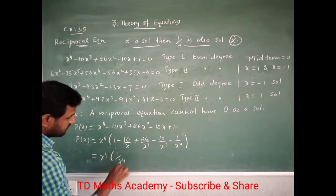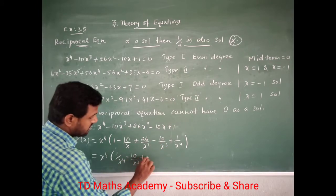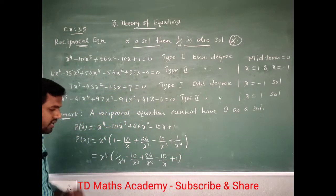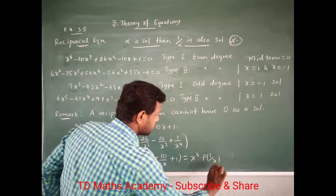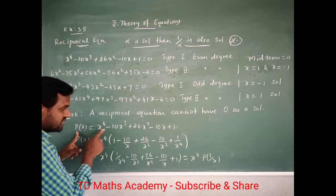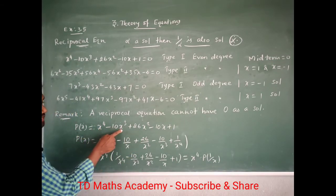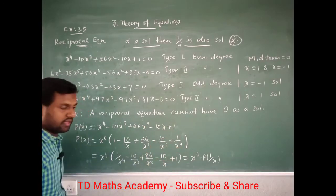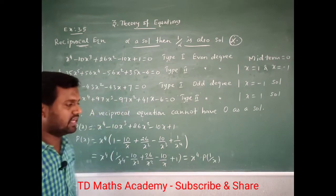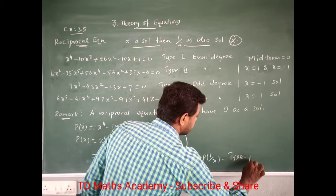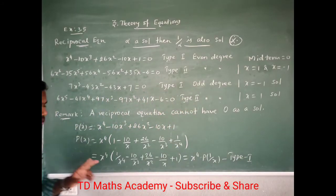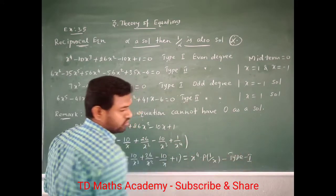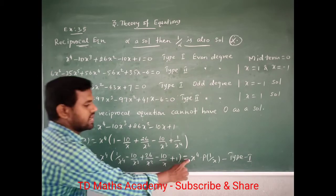This gives us: 1 by x power 4 minus 10 by x cubed plus 26 by x squared minus 10 by x plus 1. This is equal to x power 4 times p of 1 by x. So p of 1 by x equals p of x — that means it is Type 1. If x power n times p of 1 by x equals minus p of x, that is Type 2, where compulsorily there is a negative sign.